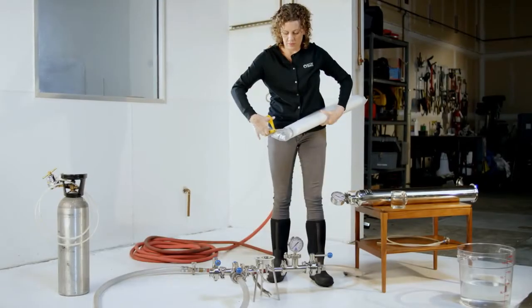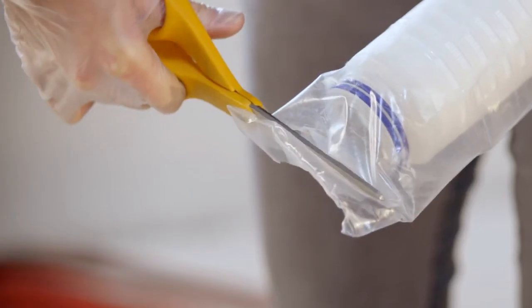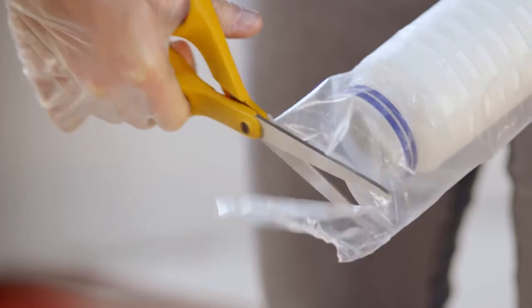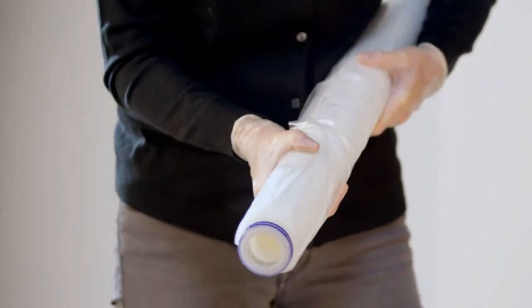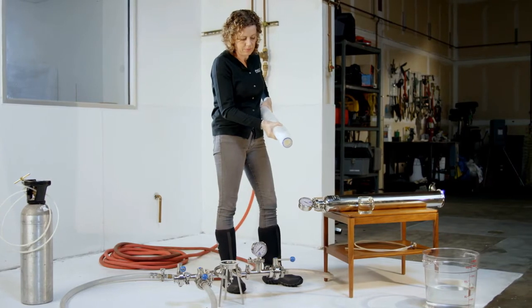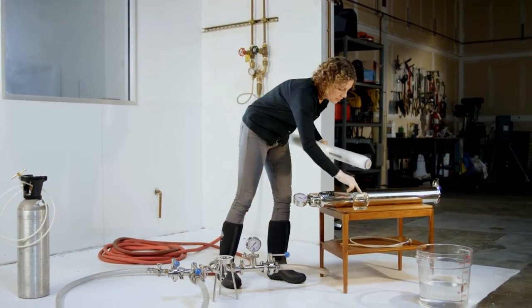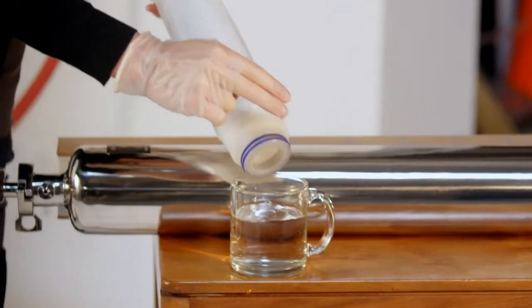When removing the cartridge from the box, cut open the O-ring end of the bag. While handling the cartridge, it's important to avoid contact of the filter media with bare hands or oily surfaces, as this may disrupt the wetting of the cartridge during testing.